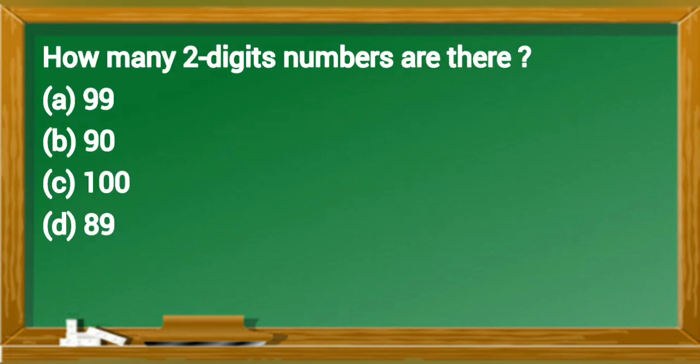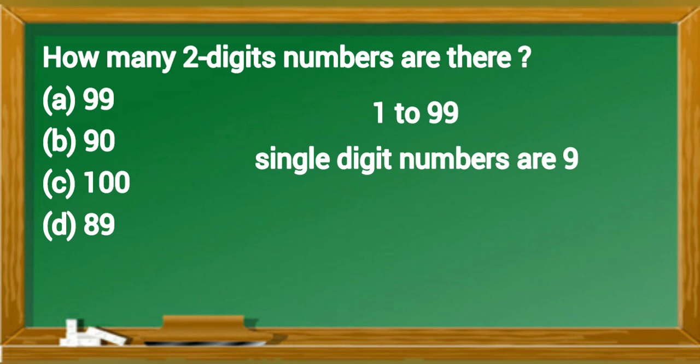How many 2-digit numbers are there? From 1 to 99, there are 1 to 9, total 9 numbers that are single digit numbers. And 99 minus 9, that is 90. So 2-digit numbers are 90. And option B is correct answer.